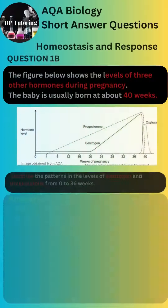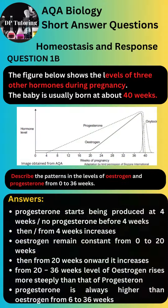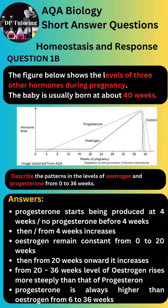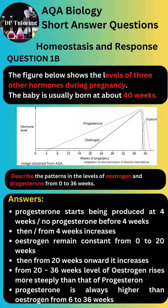Answers for Part B — there are several to choose from, but you need three. One: progesterone starts being produced at 4 weeks, or no progesterone is produced before 4 weeks. Two: from 4 weeks it then increases.